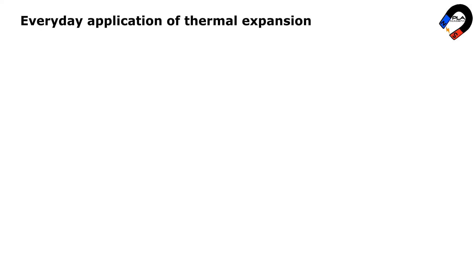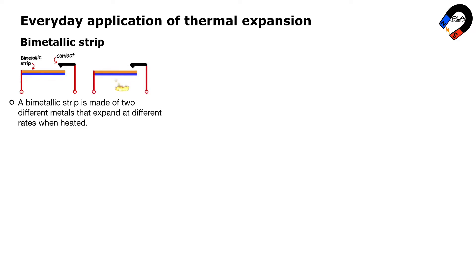The everyday application of thermal expansion. Bimetallic strip: A bimetallic strip is made of two different metals that expand at different rates when heated. This causes the strip to bend when the temperature changes. Bimetallic strips are used in many temperature-activated switches, such as those that turn on a fan when the room gets too hot.